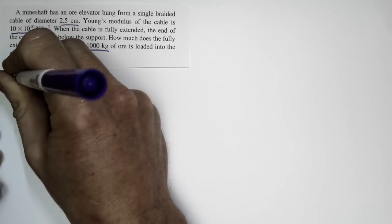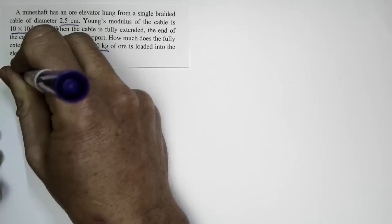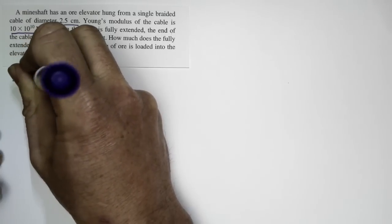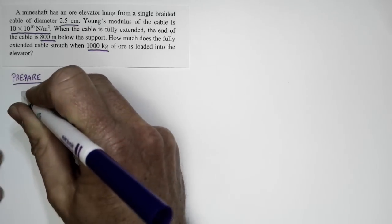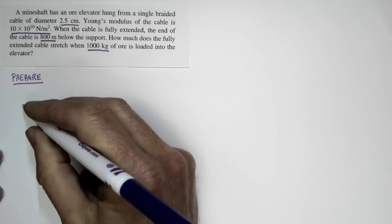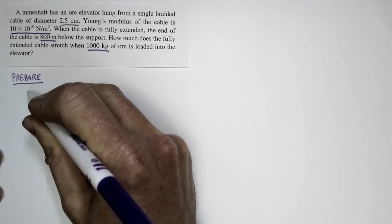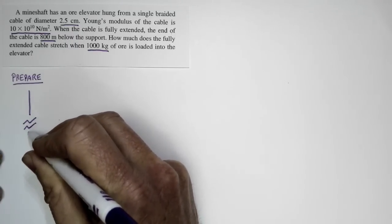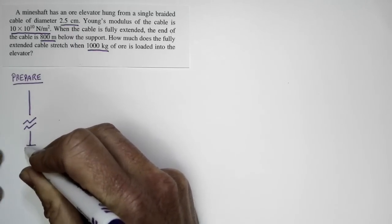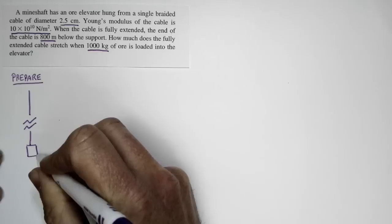Let's go ahead and set up the problem. There are a couple of things we do. First, we're going to sketch out the physical situation and identify some relevant variables and do a couple preparatory calculations. For starters, let's do a sketch. We have a long cable, and I'm going to signify that by having a little break in here, with an ore elevator suspended from it.